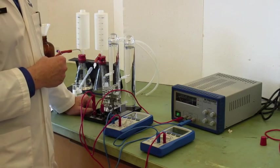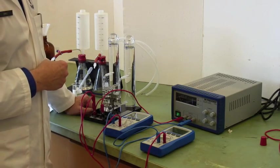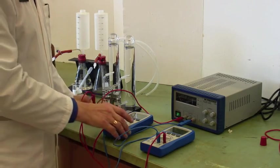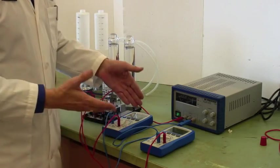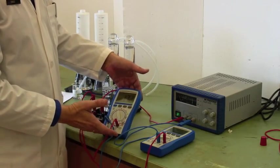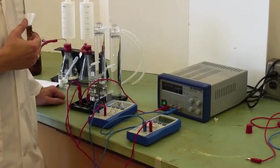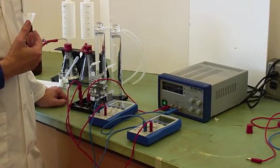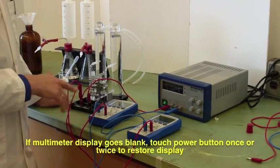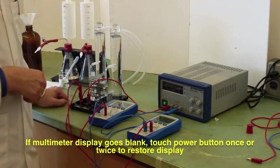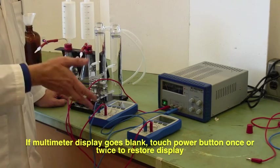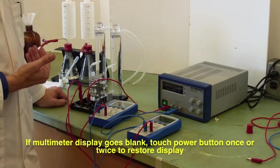This will take you considerably longer than my demonstration here. One other thing to mention here is the multimeters. After about five minutes the display will power off to save battery. So if it does go blank, just push the power button a couple of times and the number will come back again.